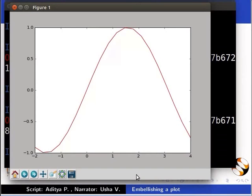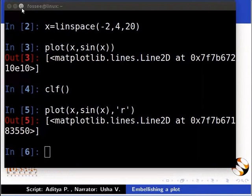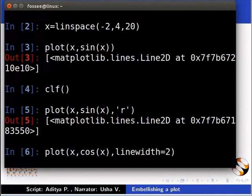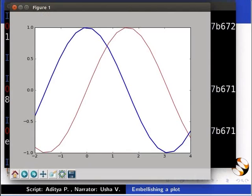Do not close the plot window. Just minimize it. We can alter the thickness of the line by using the line width argument. This time, we will draw the cosine curve on the plot window. So, type plot inside brackets x comma cos x comma linewidth is equal to 2. Press enter. A cosine curve with line thickness 2 is produced in the plot window.